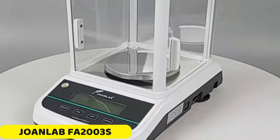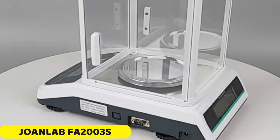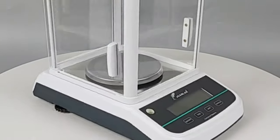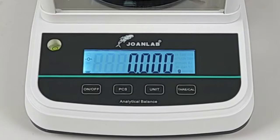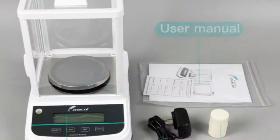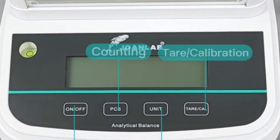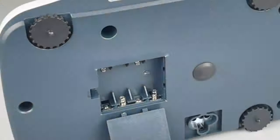Number 1: JoanLab FA2003E Analytical Balance. The JoanLab FA2003E Analytical Balance is a precision electronic balance that combines precision, functionality, and durability. It offers versatile weighing capacities of 200 grams, 300 grams, and 500 grams, with a resolution of 0.001 grams, ensuring accurate measurements for demanding tasks.